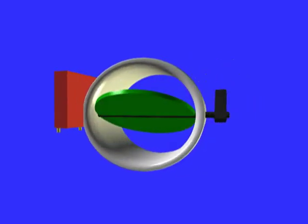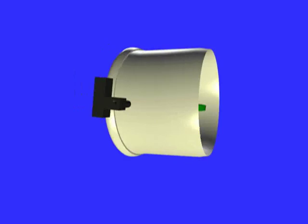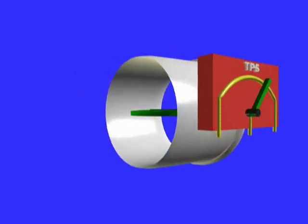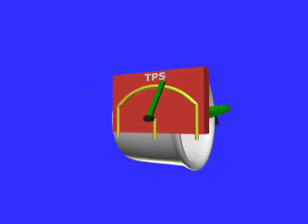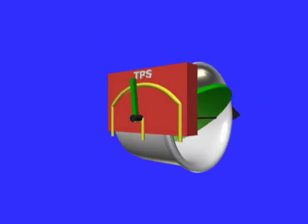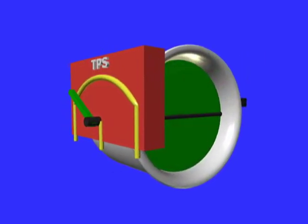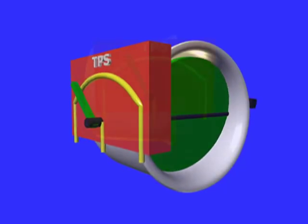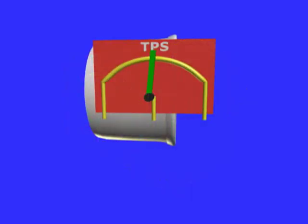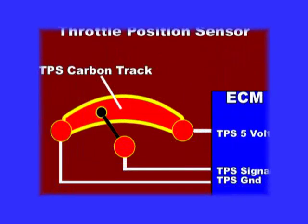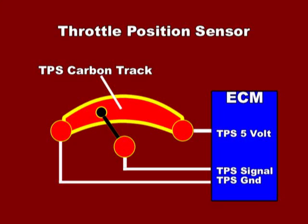The absolute throttle position reports the TPS value taking into account the offset, so that at 0.00 volts this PID will read 0.00% and at 5.00 volts it will read 100%.